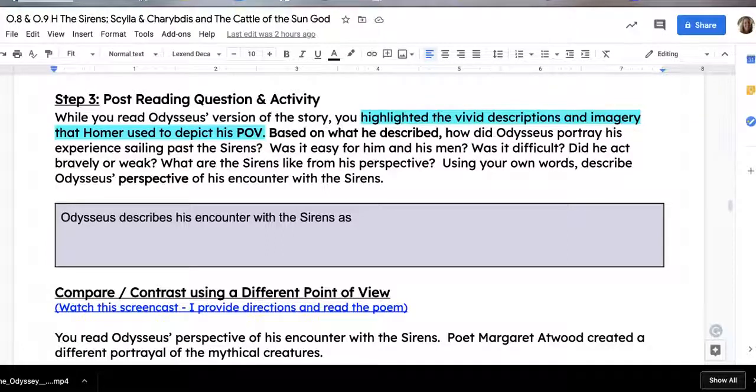Now that you've read the Sirens, Scylla, and Charybdis, we're going to work on an activity that, first of all, has you answer a question about Odysseus' point of view, and then has you compare and contrast his point of view to a different point of view from a poem.